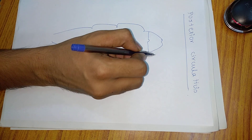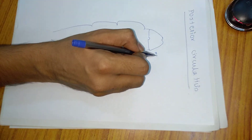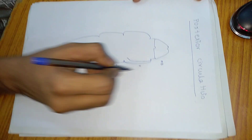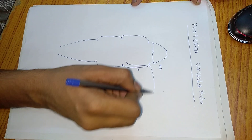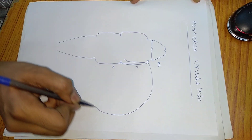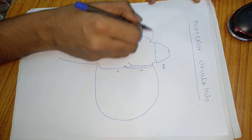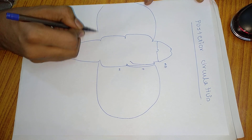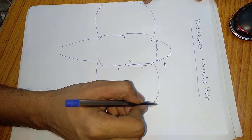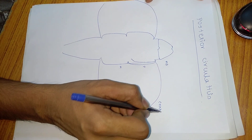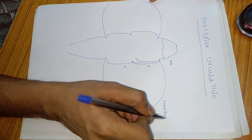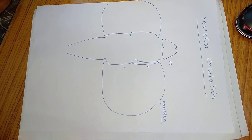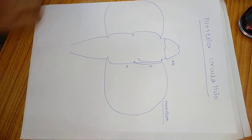So this will be your midbrain, this is pons, and this is medulla. This is the cerebellum — hopefully it is looking like a brainstem.